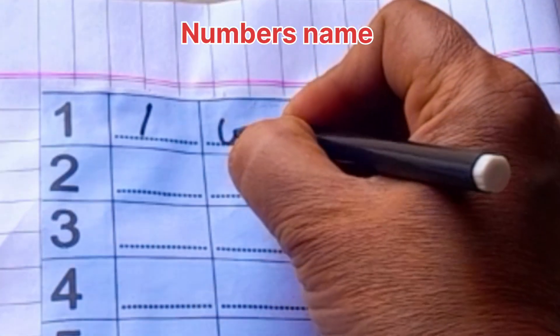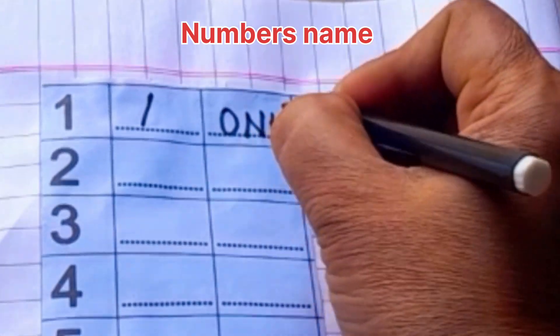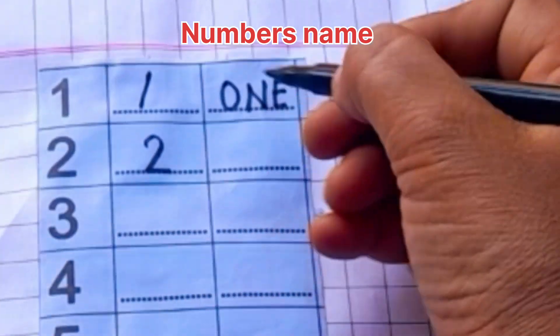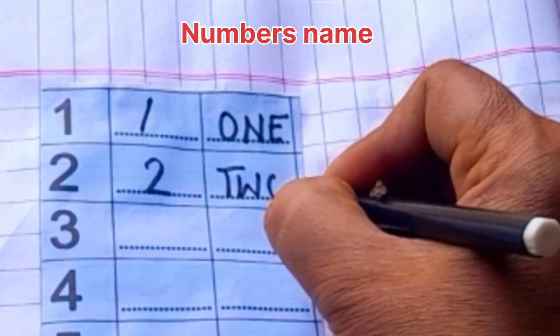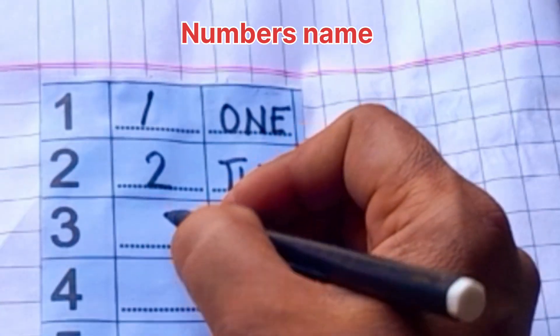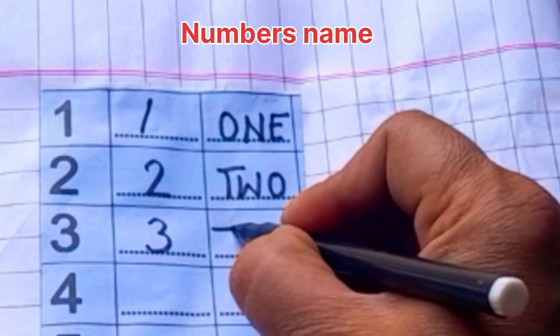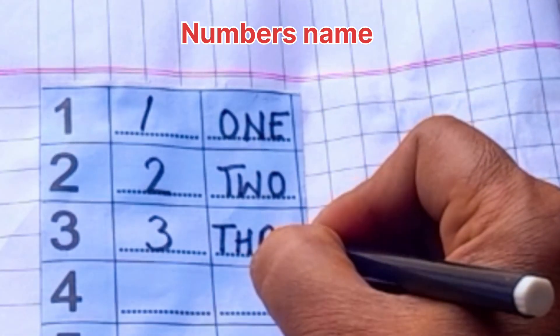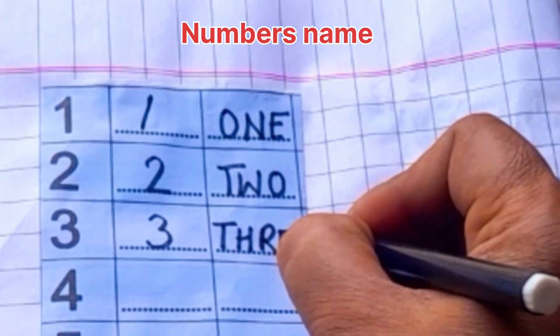One, O, N, E. One, two. T, W, O. Two, three. T, H, R, double E. Three.